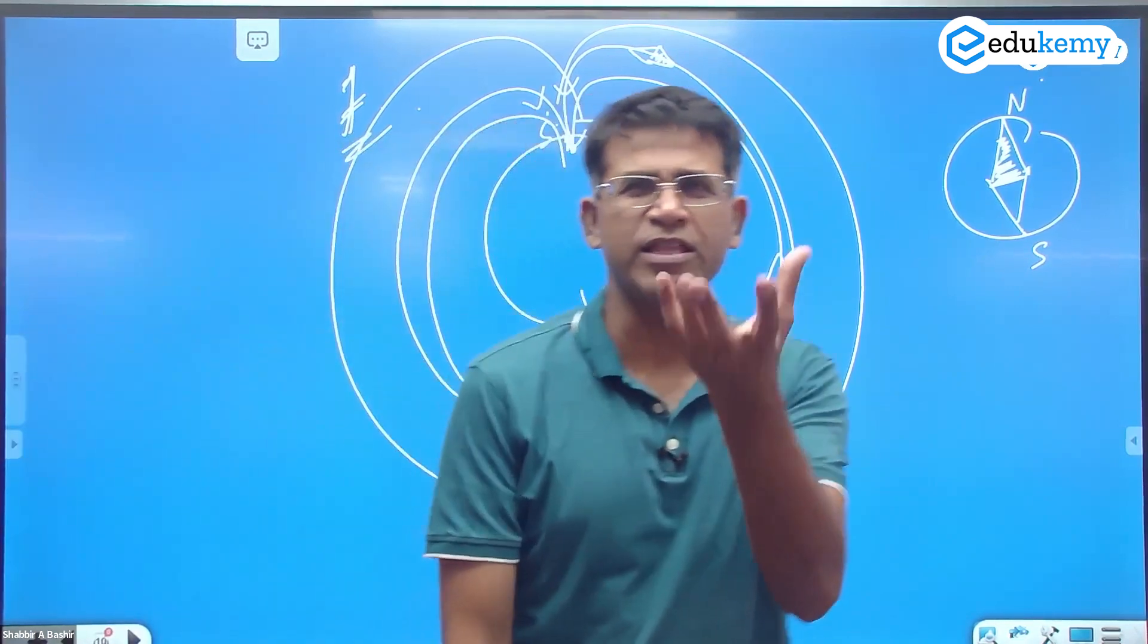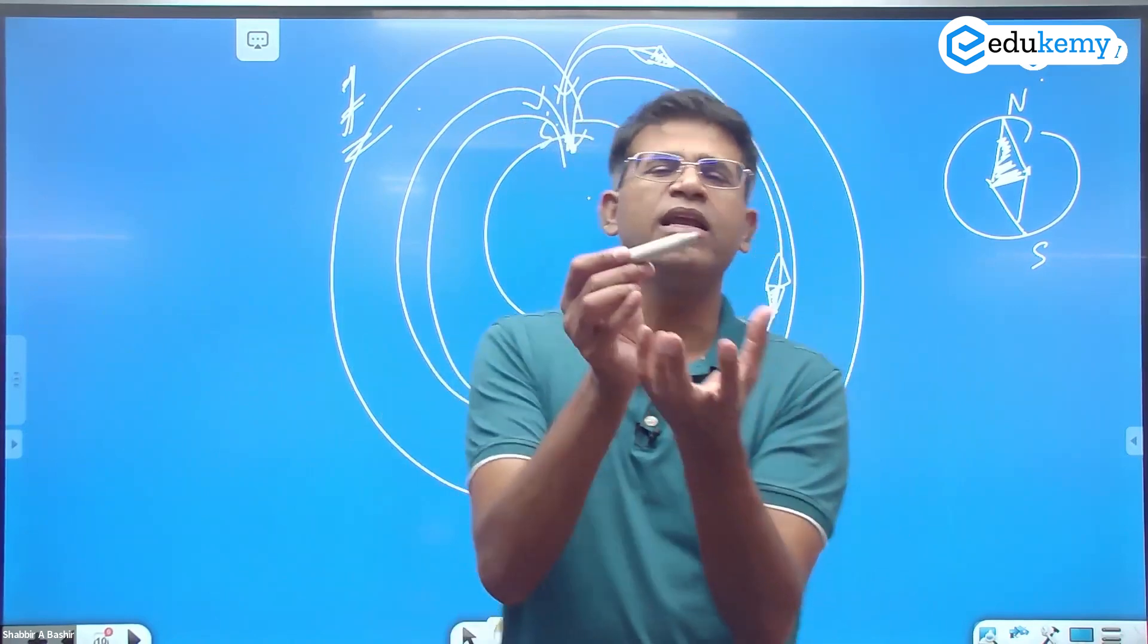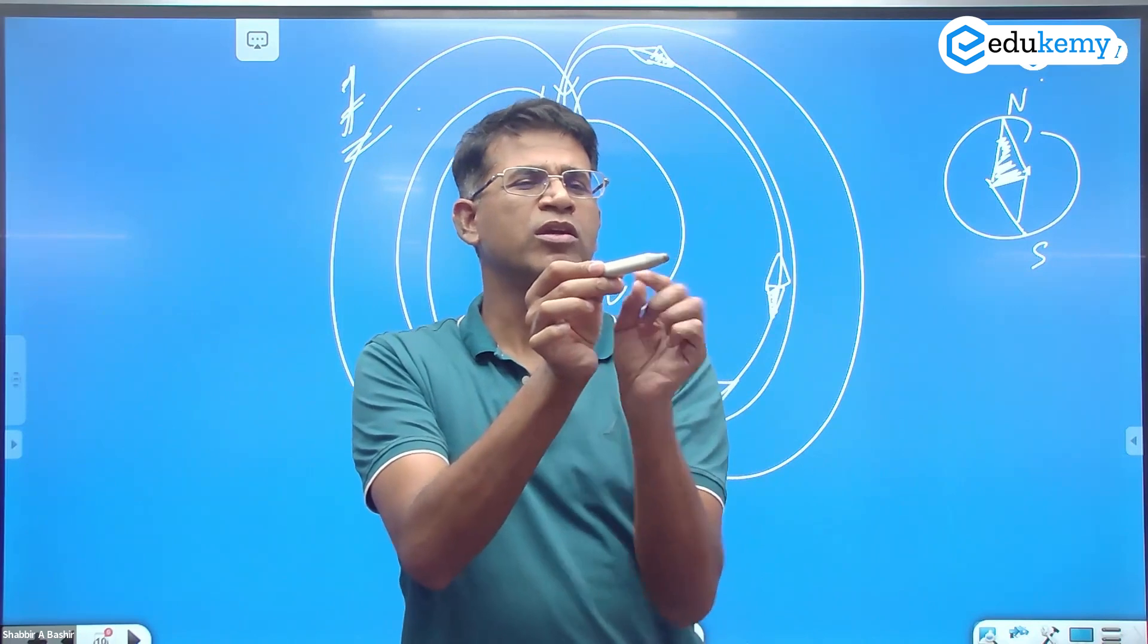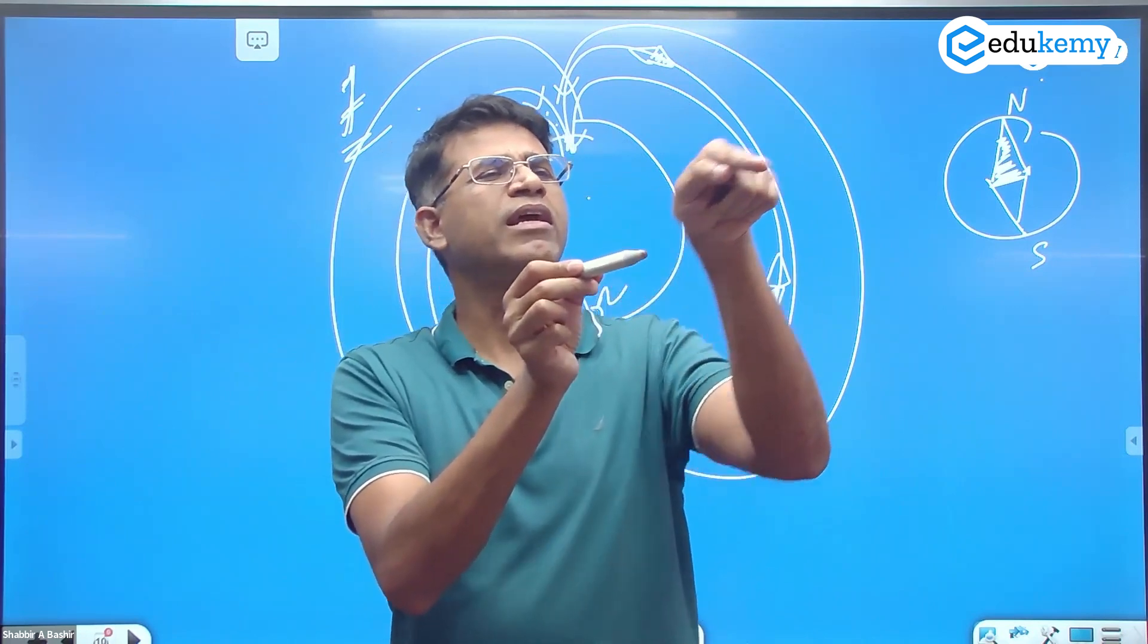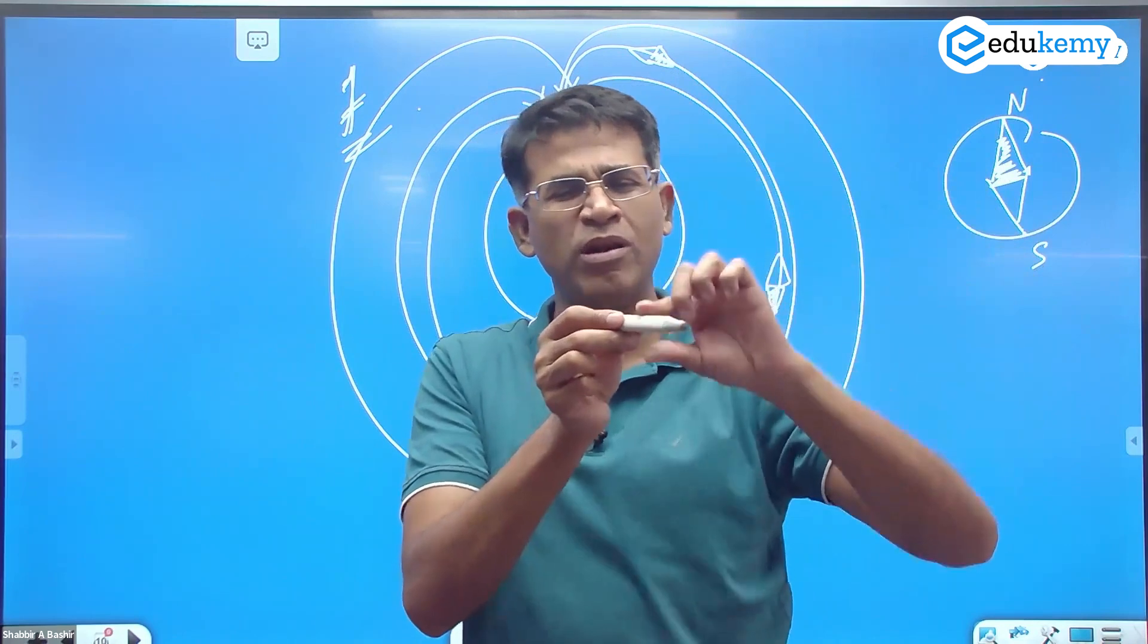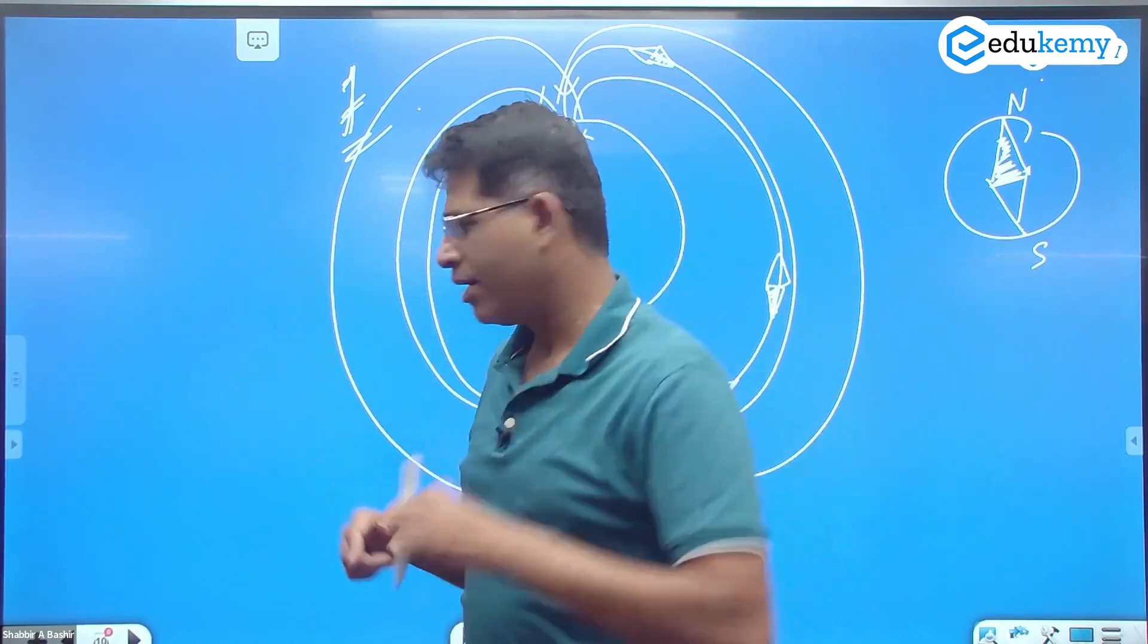And that's how we know kaha par north hai, kaha par south hai. You take a compass here itself in the classroom or in your room back online, you'll see that needle is pointing in some direction. So maybe this is showing north, so it's along the line. Along the line it goes and hits the geographical north pole. Along the line it goes and hits the geographical south pole.